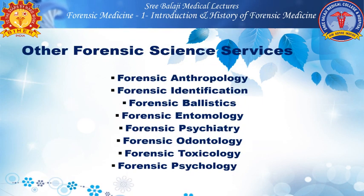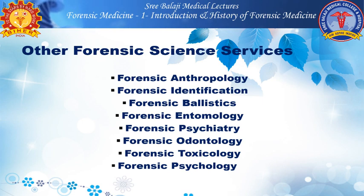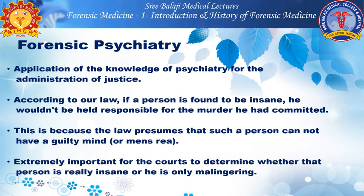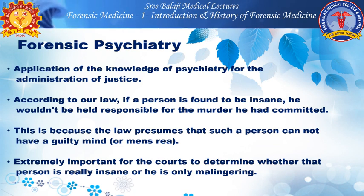There are other forensic science services like forensic anthropology, forensic identification, forensic biologics, forensic entomology, forensic psychiatry, forensic odontology, forensic toxicology and forensic psychology. Forensic psychiatry is the application of knowledge of psychiatry for the administration of justice. According to law, if a person is found to be insane, he would not be held responsible for a murder he had committed, because the law presumes that such a person cannot have a guilty mind or mens rea.